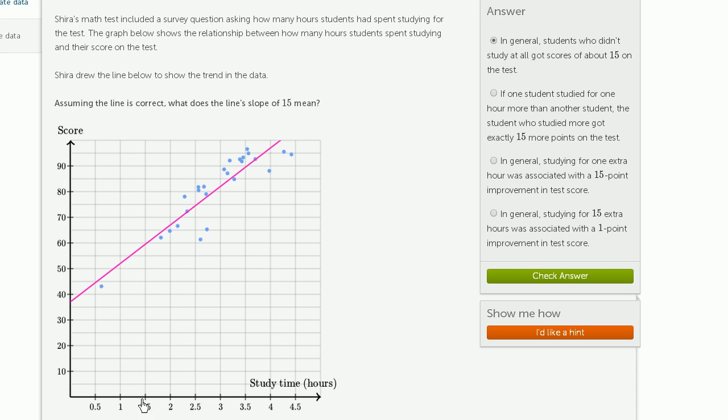The horizontal axis is time studying in hours. The vertical axis is scores on the test, and each of these blue dots represents the time and the score for a given student.